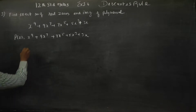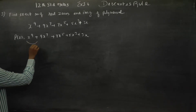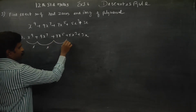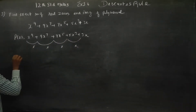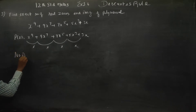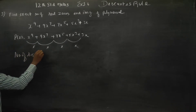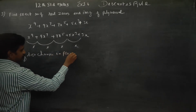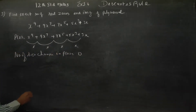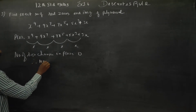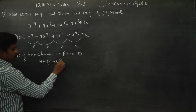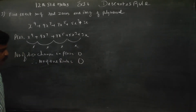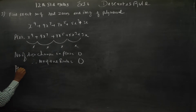Let us check the number of sign changes: positive to positive — no change; positive to positive — no change; positive to positive — no change; positive to positive — no change. The number of sign changes in p(x) is 0, nil. Therefore, the number of positive roots is also nil — no positive roots.